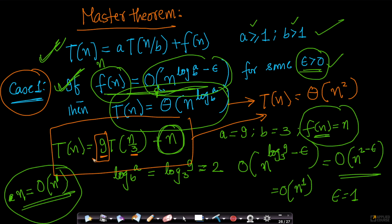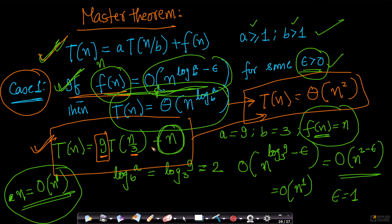This is the formulaic way of solving recurrences — extremely simple and powerful. We just identified a = 9, b = 3, checked that f(n) satisfies the Case 1 condition, and directly concluded: T(n) = Θ(n^(log_9 base 3)) = Θ(n²). Problem solved.